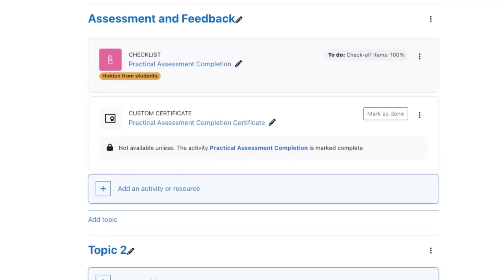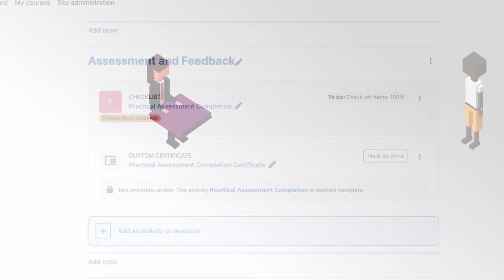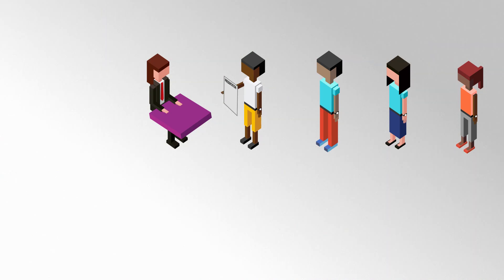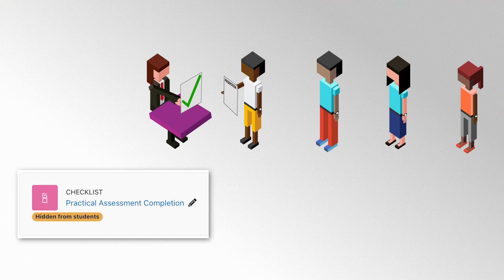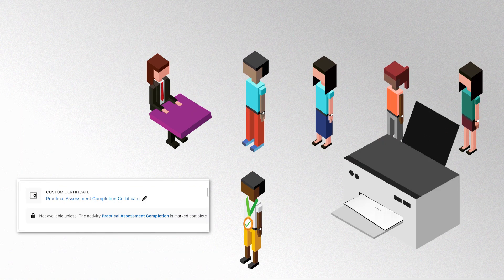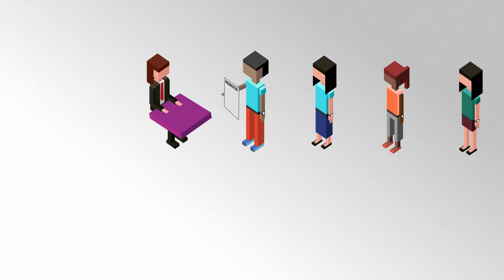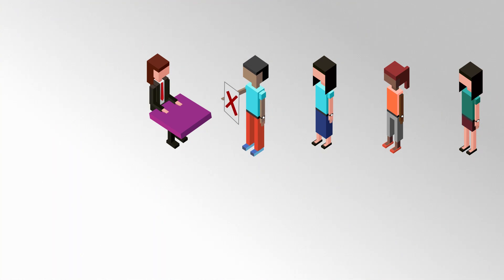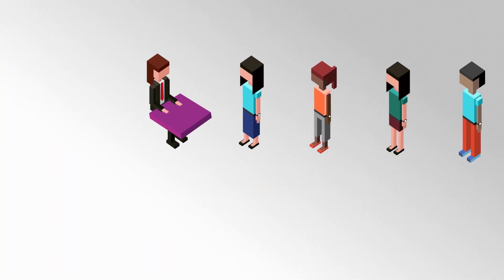And that's the workflow finished. Students arrive to take the assessment. If they're successful, the instructor ticks the checklist. The student can then automatically access their digital certificate, which they can print out and take with them. If students are unsuccessful, they cannot access the certificate and will need to re-attempt the assessment.